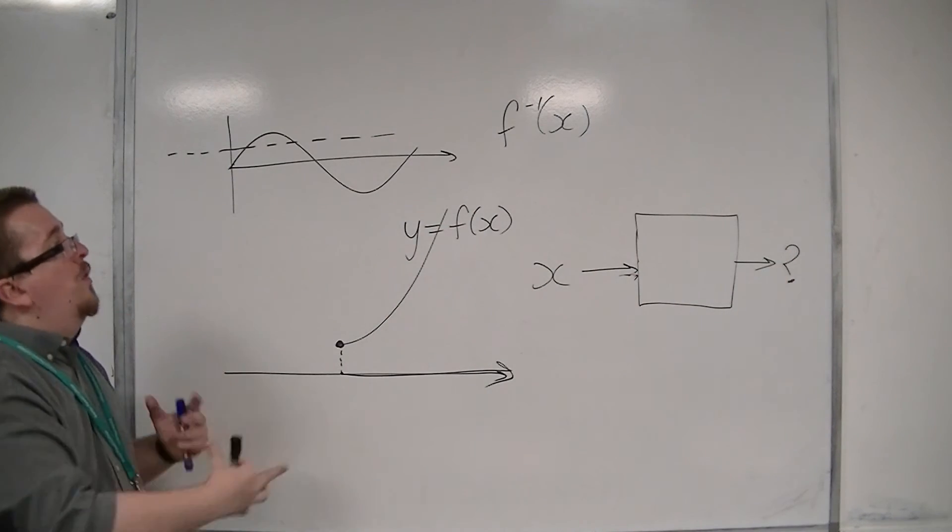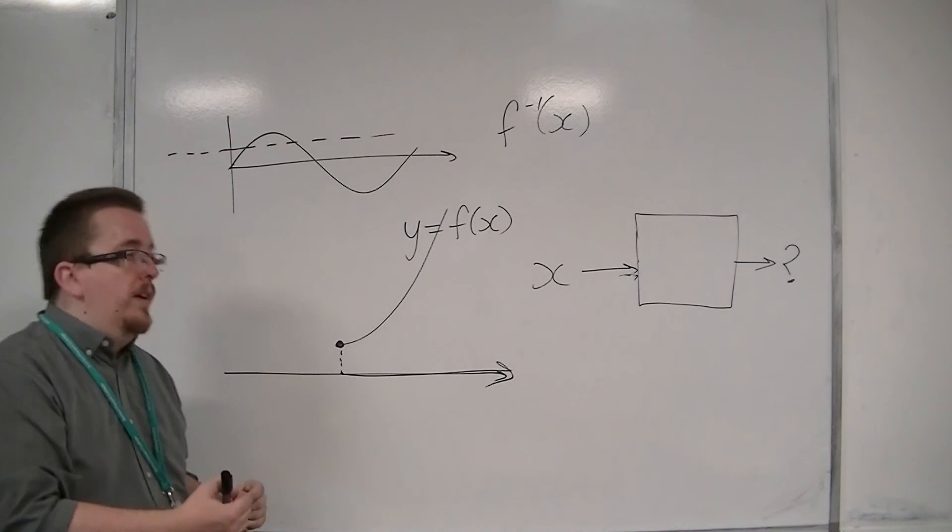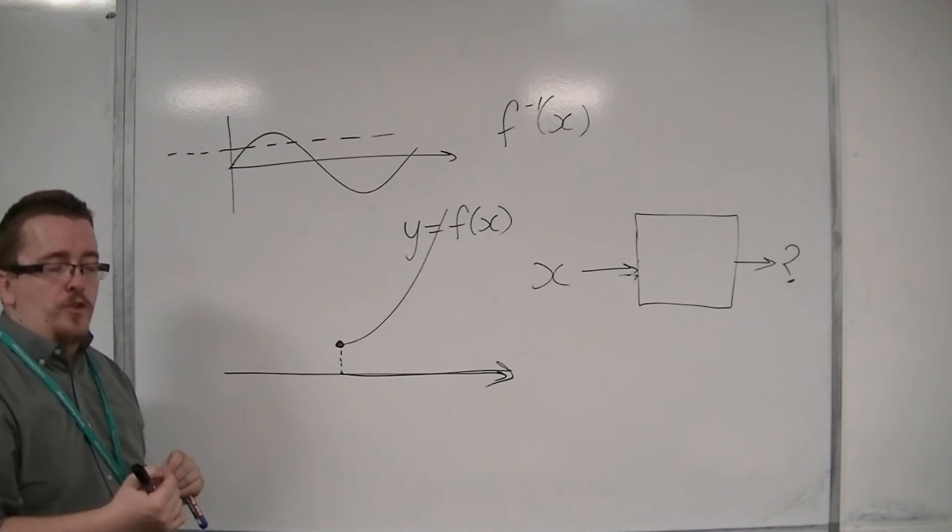So that is why f of x must be one-to-one, in order for me to find f minus one of x, the inverse function.